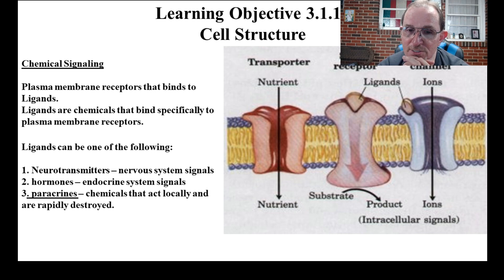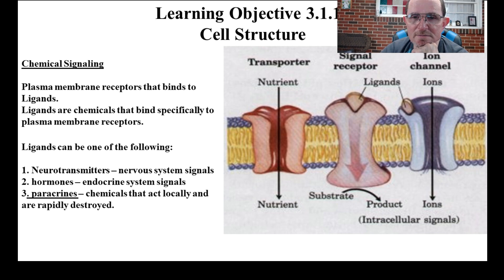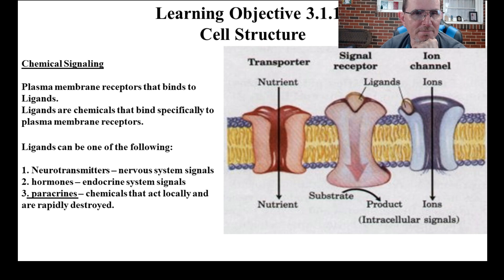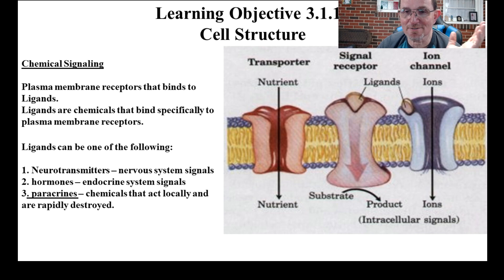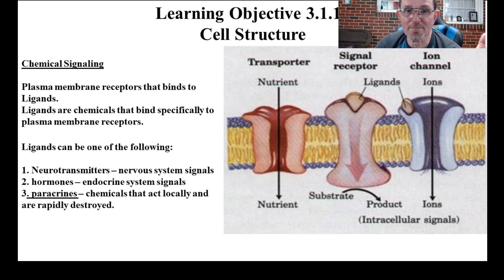The glycocalyx — if I were to give you one short definition for it, I would call it the cell's ID. That's something we use so that our immune system will recognize our cells as being us and not foreign. When that fails, it's when you get the autoimmune diseases. Plasma membrane receptors that bind to ligands — all a ligand is, is a molecule that binds to a receptor. Whatever that receptor is, it causes something to happen — like opening a channel to let sodium in, potassium out, or calcium.